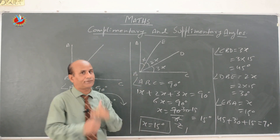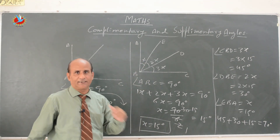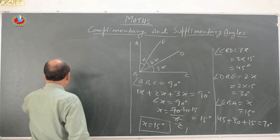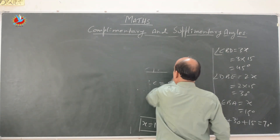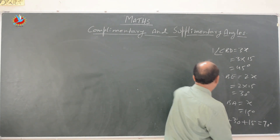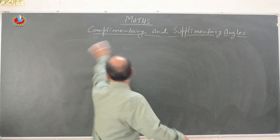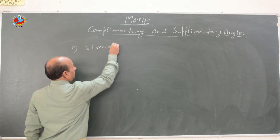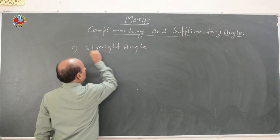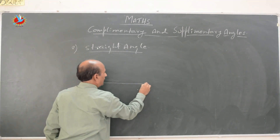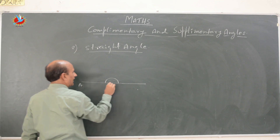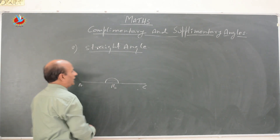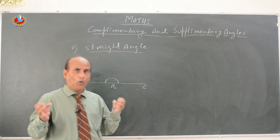That was the first part. The second part is the straight angle. If we divide the 180-degree angle into different parts, then the sum must be equal to 180 degrees. A straight angle has a measurement of 180 degrees. So if we divide this angle into two or three parts, the sum must equal 180 degrees.